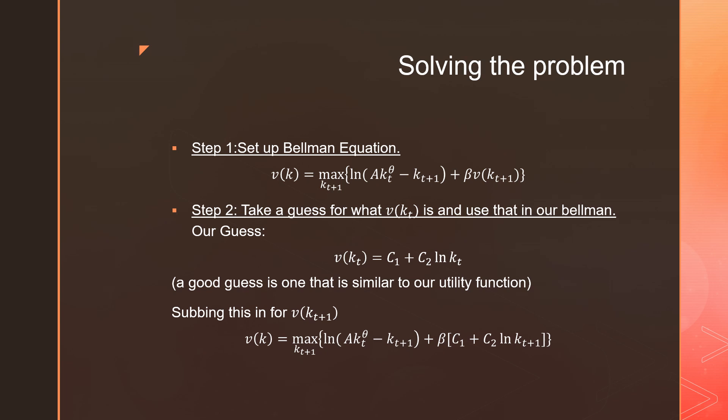Step number two is we're going to take a guess for what V(k_t) is going to be in our Bellman equation. So as we can see, our guess is going to be C_1 plus C_2 times log k_t. It should be noted that a good guess is going to be one that is similar to our utility function. Subbing this in for V(k_{t+1}), we get the following.